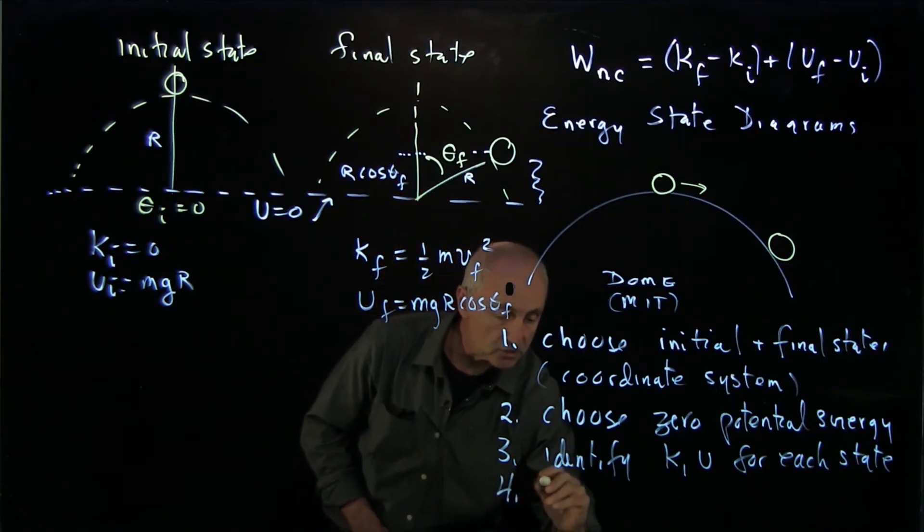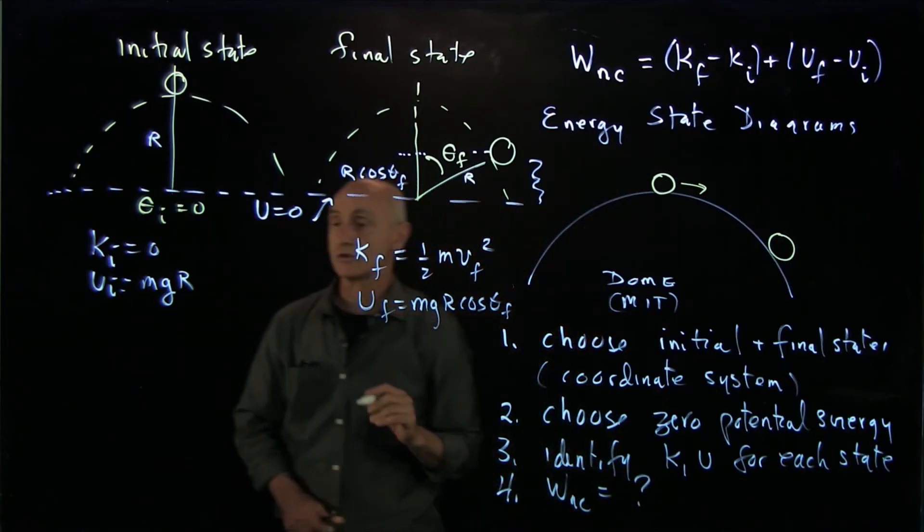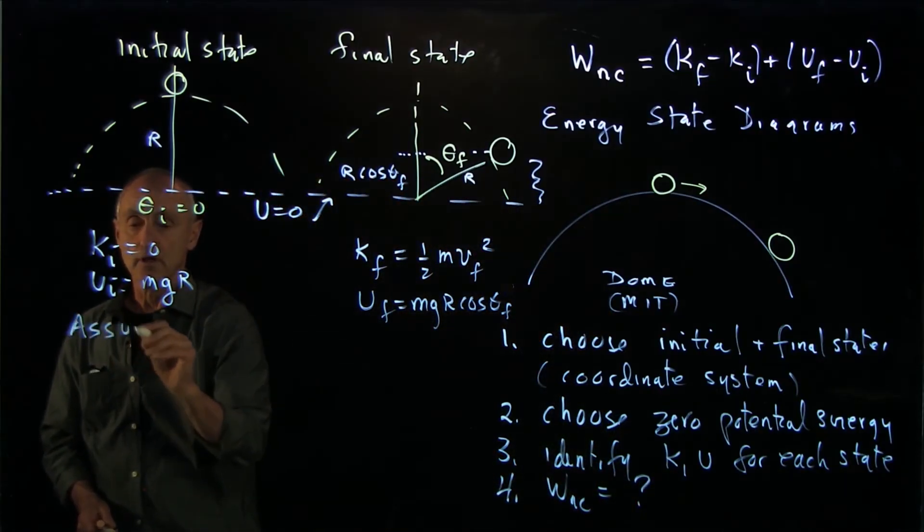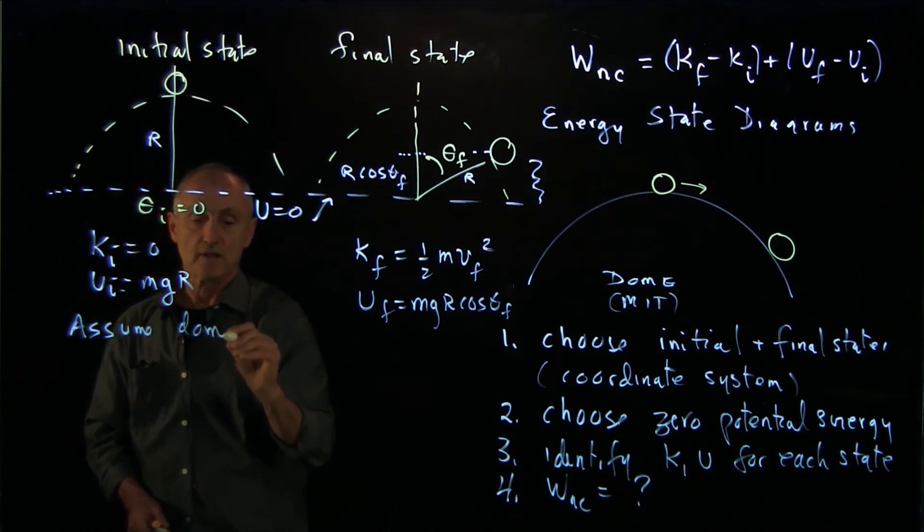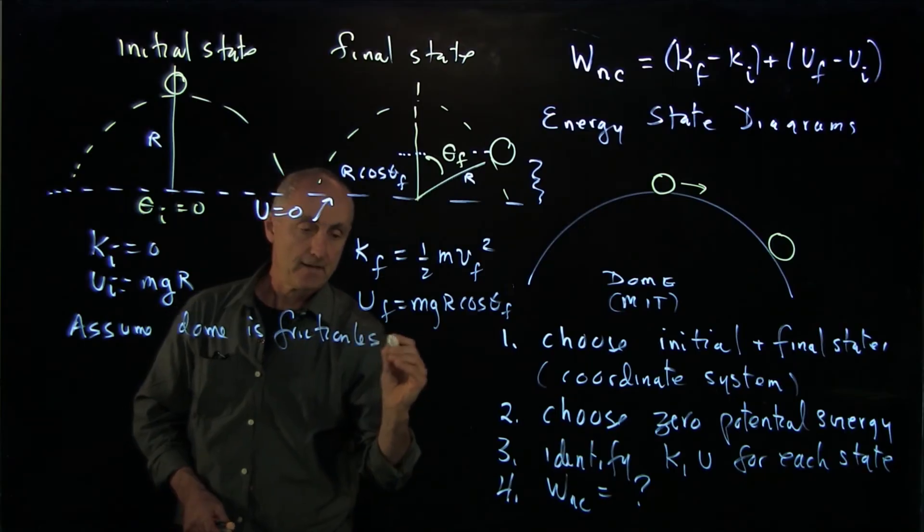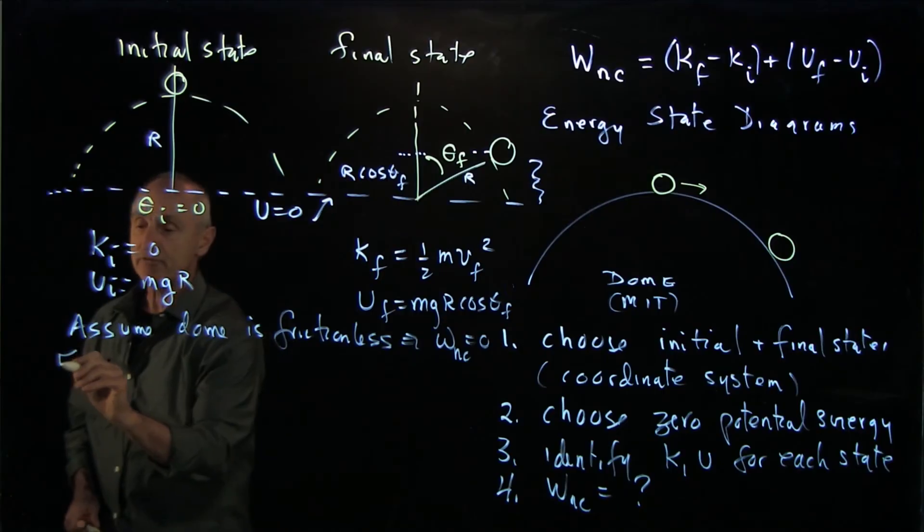Now, the fourth step is to identify W non-conservative. Is there any non-conservative work? Now, here, let's assume the dome is frictionless. And that means that W non-conservative is 0.